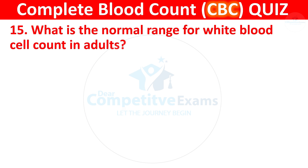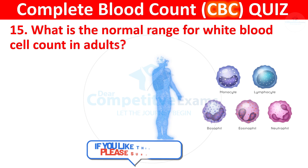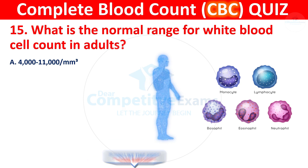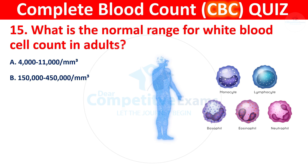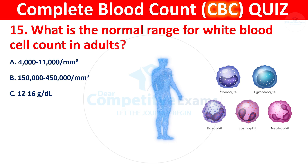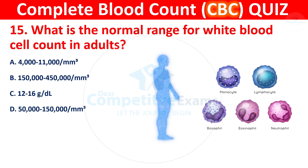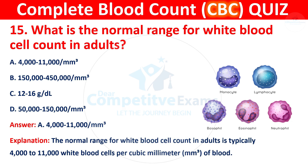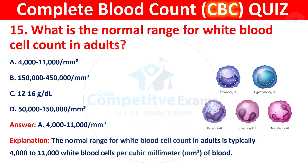Question 15: What is the normal range for white blood cell count in adults? Your options are 4,000 to 11,000; 1,50,000 to 4,50,000; 12 to 16; or 50,000 to 1,50,000. The correct answer is 4,000 to 11,000 per cubic millimeter. The normal range for white blood cell count in adults is typically 4,000 to 11,000 white blood cells per cubic millimeter of blood.